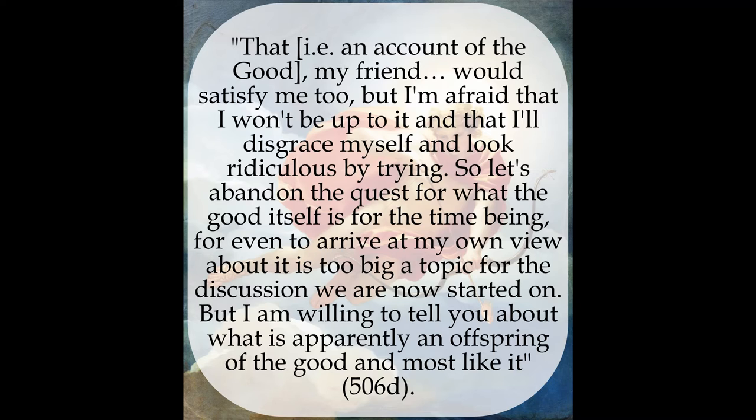Socrates' interlocutors ask him to define the nature of the good. He remarks that this task is beyond his powers, but he will attempt to clarify it as best he can through an analogy to the sun, the good's offspring. Socrates observes: 'That, my friend, would satisfy me too, but I'm afraid that I won't be up to it, and that I'll disgrace myself and look ridiculous by trying. So let's abandon the quest for what the good itself is for the time being. For even to arrive at my own view about it is too big a topic for the discussion we are now started on. But I am willing to tell you about what is apparently an offspring of the good, and most like it.'